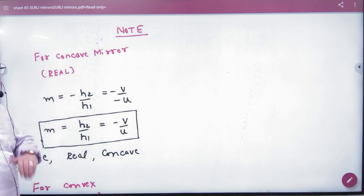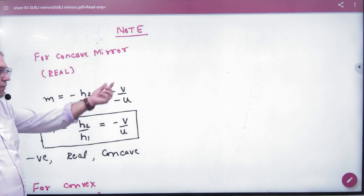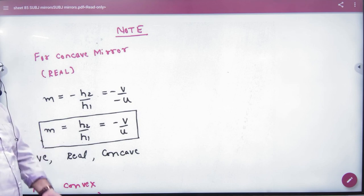What does the real image make? It makes a big difference. That's why it has taken minus H2 and H1, and minus V and minus U, because the real image is always on the same side.